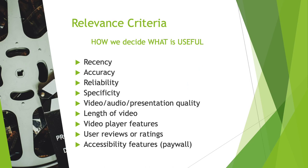What is relevance criteria? Relevance criteria are basically any aspect of an information source that help us decide that it fulfills our information need — it's how we decide what's useful about information. Common relevance criteria people use with online video include: is the video quality good, is it recent, is it accurate, is it reliable, how specific is the information. People also look at user reviews and ratings to help decide if a video is relevant. Accessibility features are really important as well — whether it's behind a paywall, or whether you can get to the video quickly.